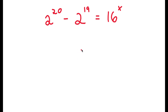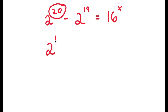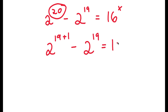So in this problem, I have 2 to the power of 20 minus 2 to the power of 19 is equal to 16 to the power of x. I'm going to first start by rewriting 20 as 19 plus 1. So now I have 2 to the power of 19 plus 1 minus 2 to the power of 19 is equal to 16 to the power of x.